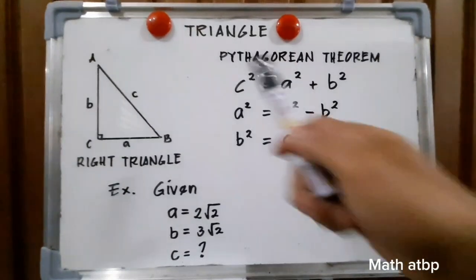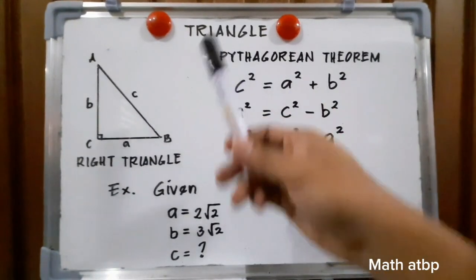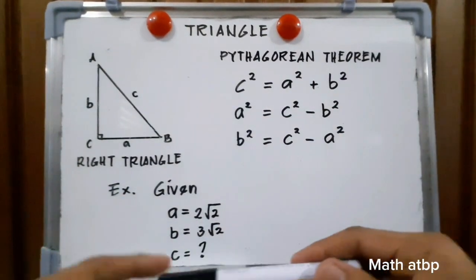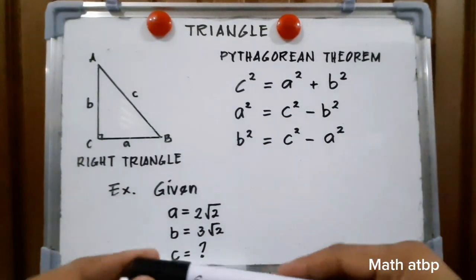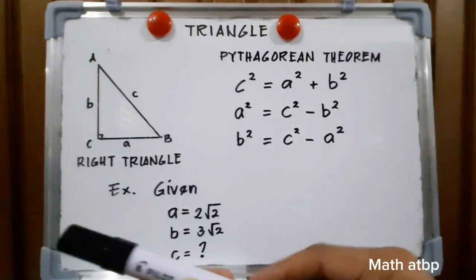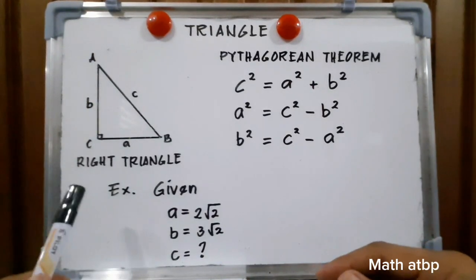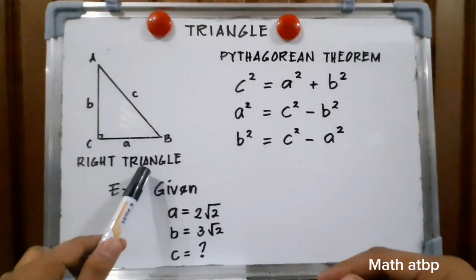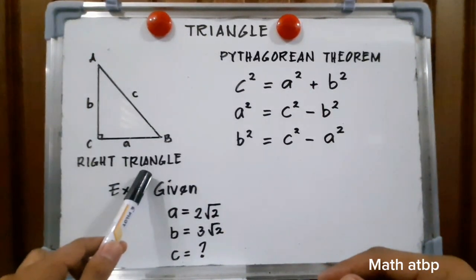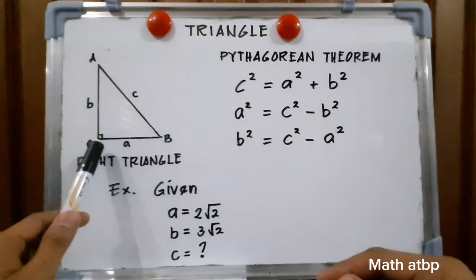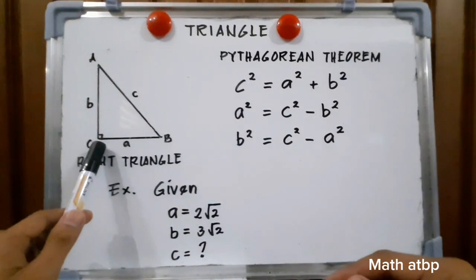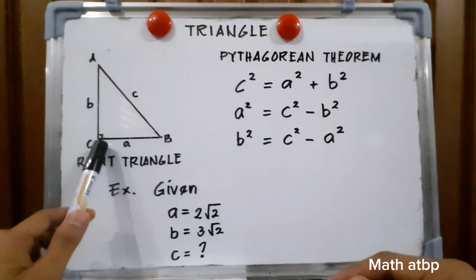Let us study the triangle. A triangle is a polygon with three sides. First, we're going to study the right triangle. When we say right triangle, one of the angles of a right triangle is equivalent to 90 degrees.